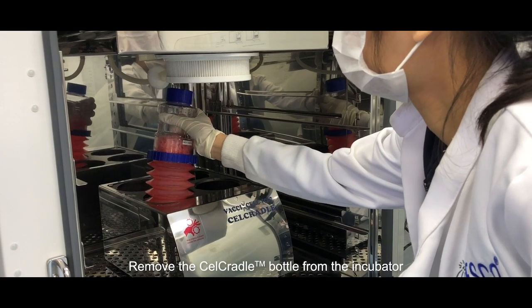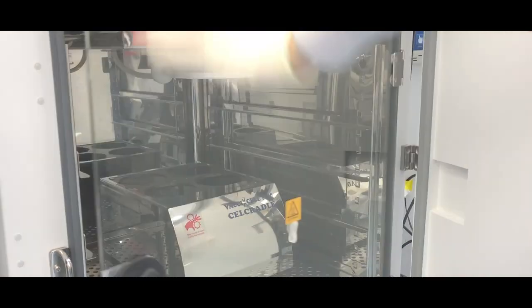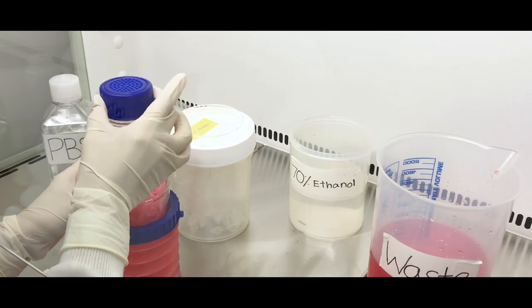To start off, remove the cell cradle bottle from the incubator. In the biosafety cabinet, uncap the bottle and place the blue vented cap into the petri dish to ensure sterility.